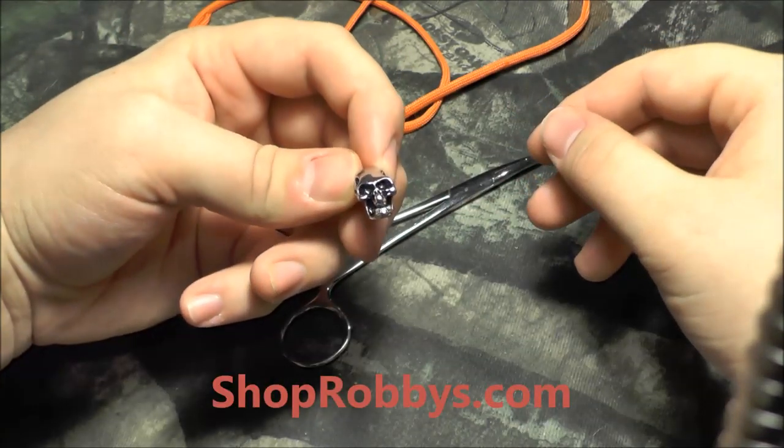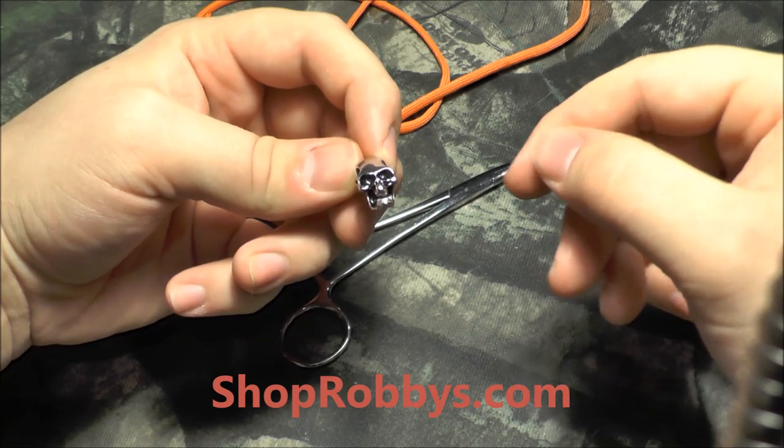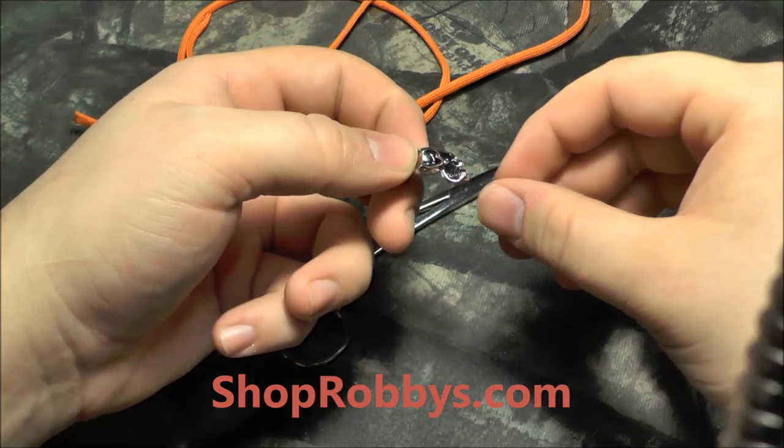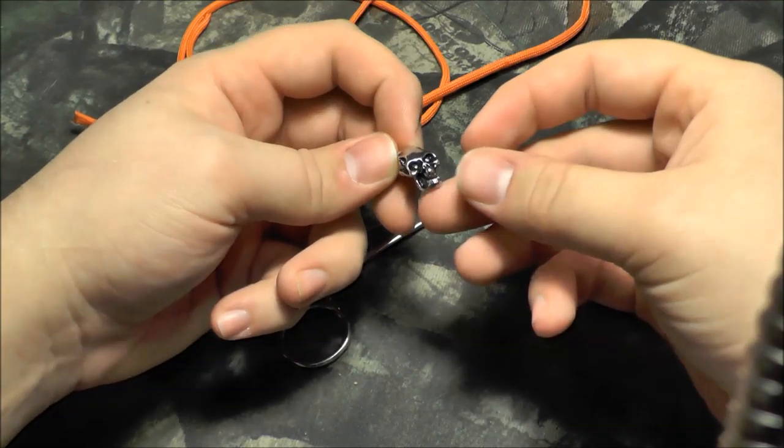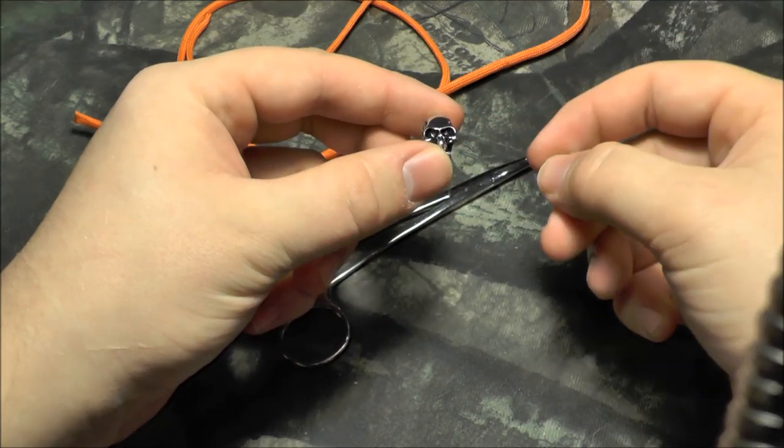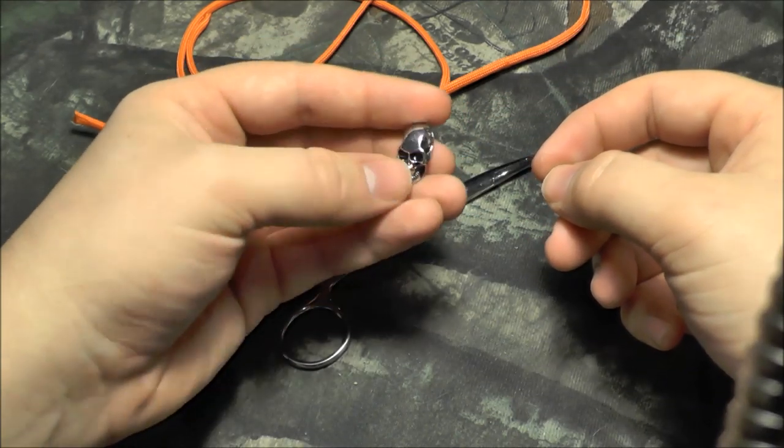You can get these little beads at ShopRobbies.com. This is where I got these and I think they were a dollar twenty-five apiece, which is pretty cheap compared to some other beads you can find out there. But if you have a skull that goes sideways or really any bead, this will be for you.